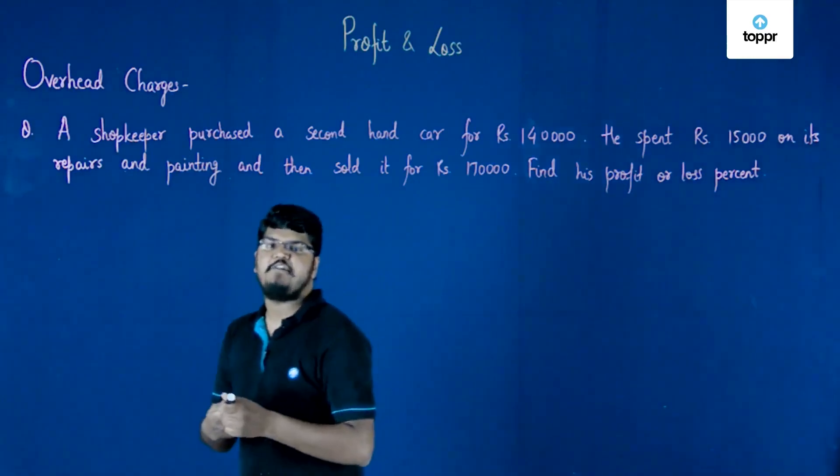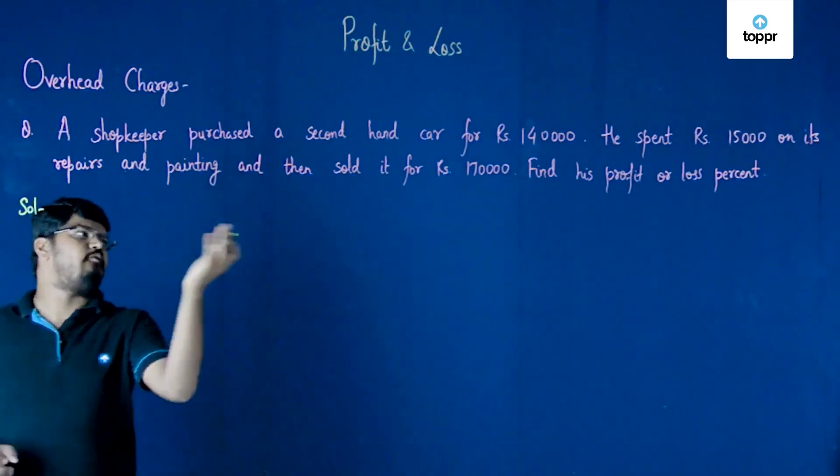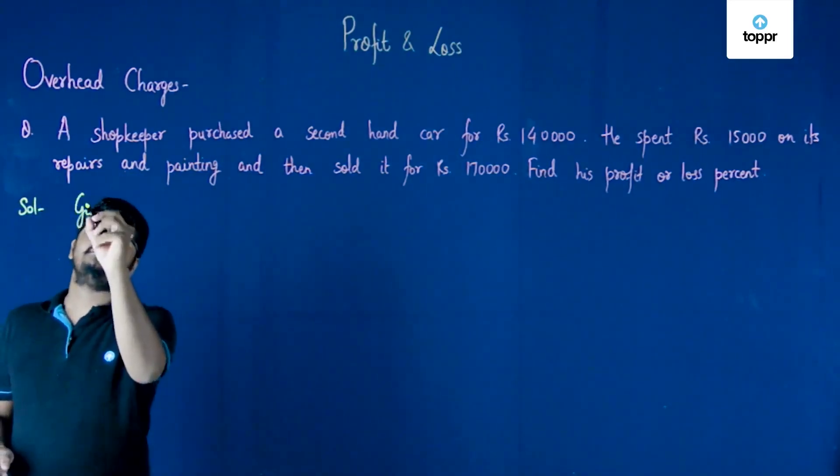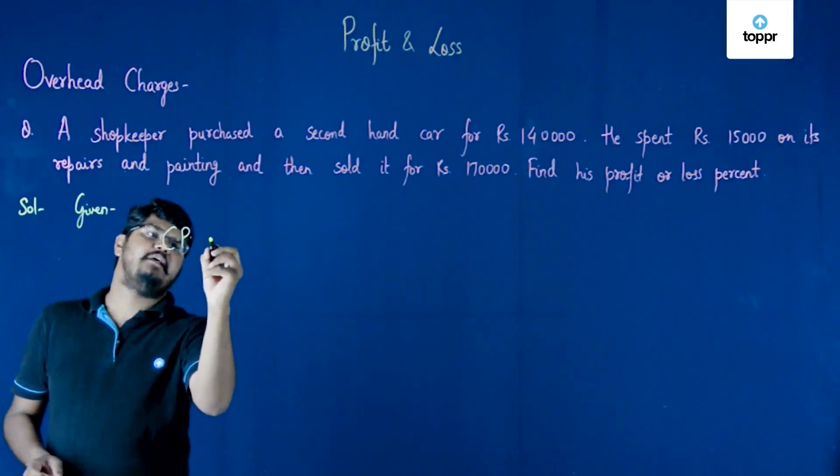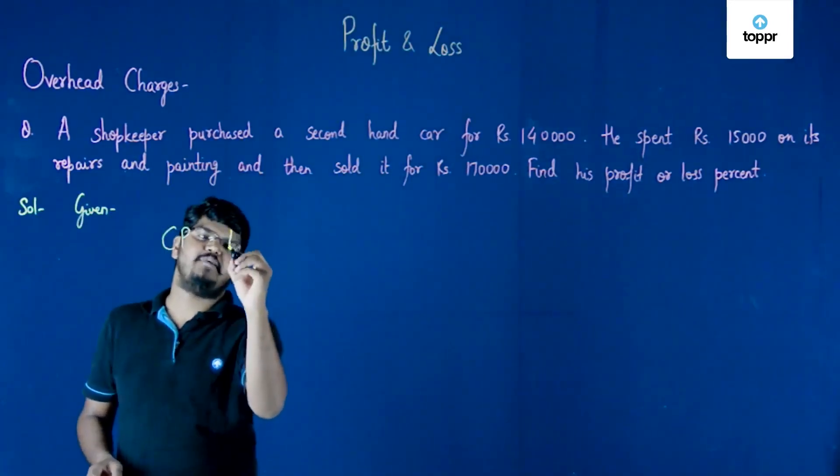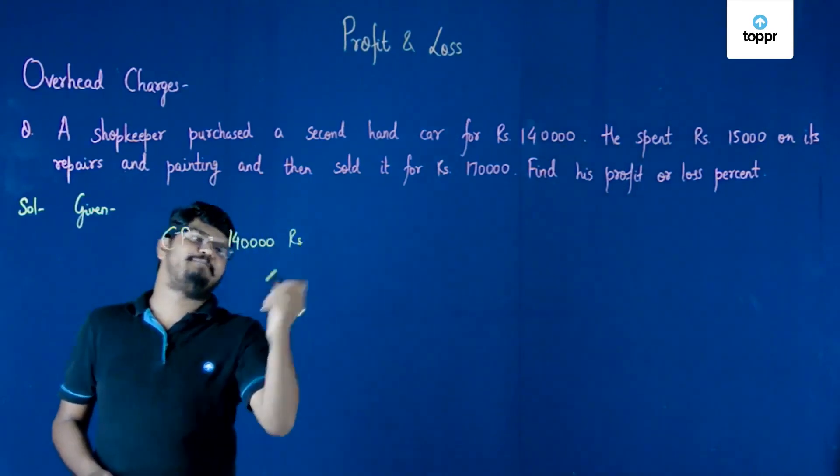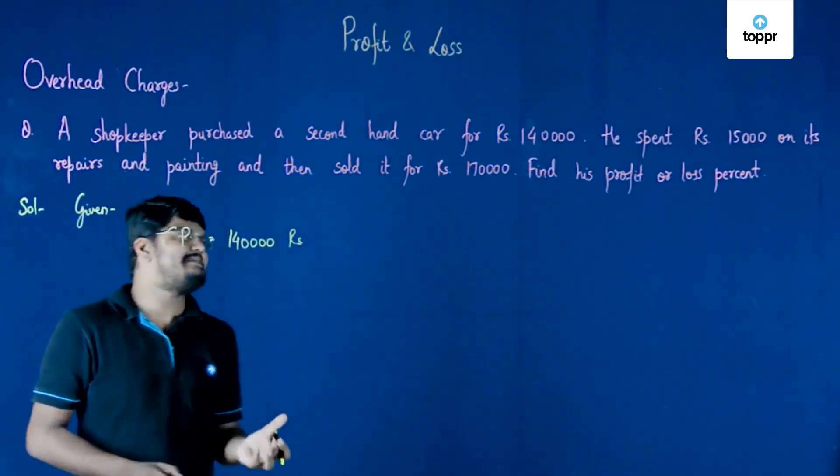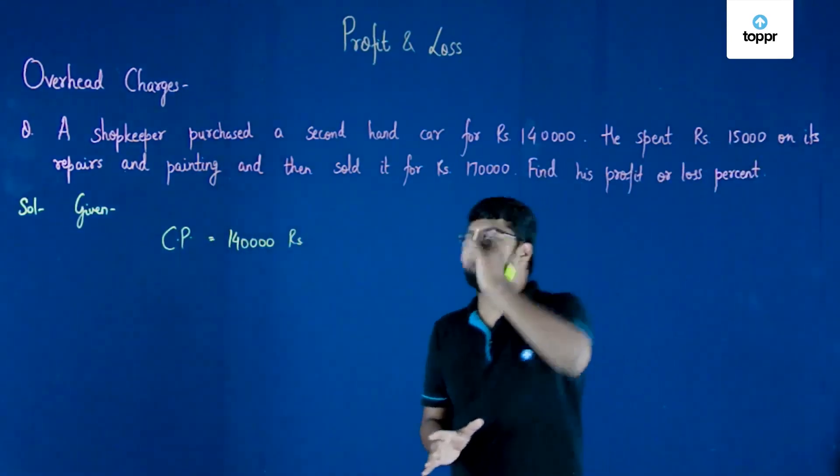Now in this particular question, you can see that this car has been purchased for 1 lakh 40,000 rupees. This means the first information given to us is the cost price: 1 lakh 40,000 rupees. But now there's a big but here.